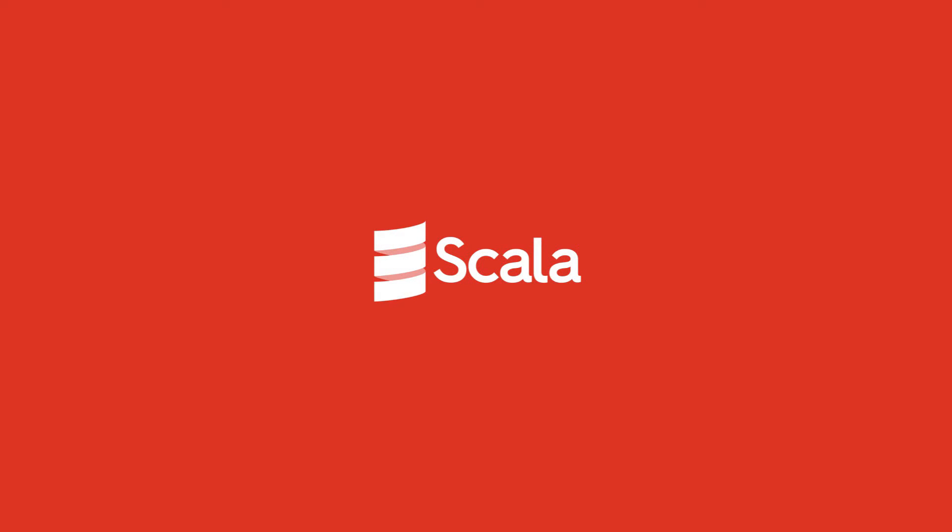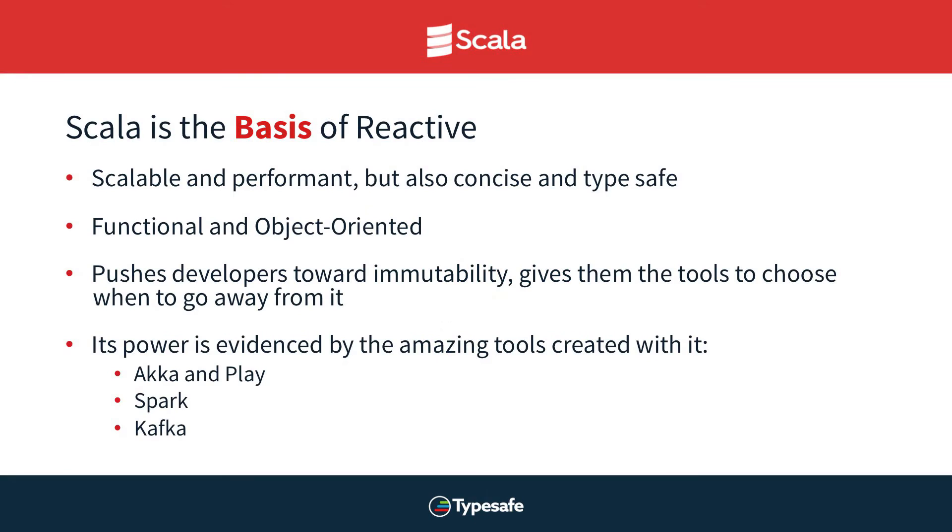Scala is the basis of reactive. It's scalable and performant, but also concise and type-safe. Type safety is critical for building reactive applications because dynamic languages give you no guarantee of correctness unless you've written tests that prove every possible interaction. The conciseness means you're no longer writing as much code to do basic things — you're eliminating boilerplate. Scala also gives you the toolkit to solve your problems specifically, whether it's functional approaches or object-oriented approaches.